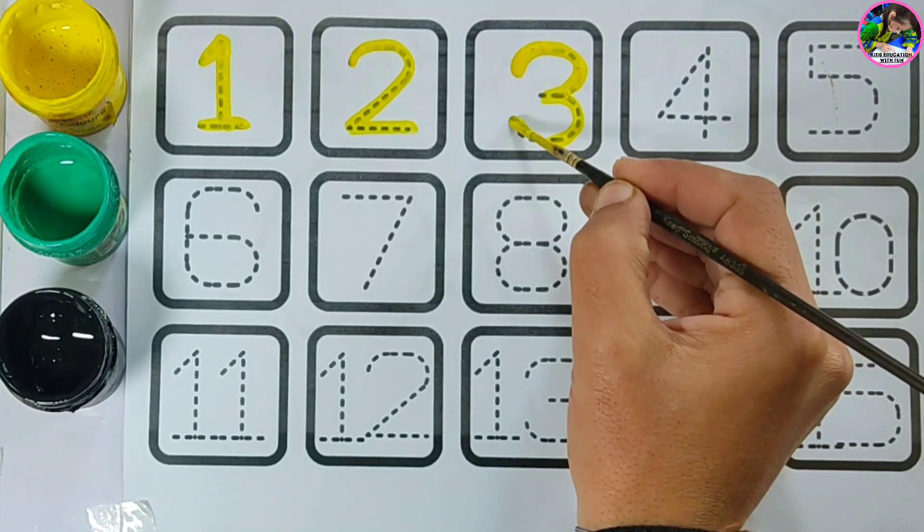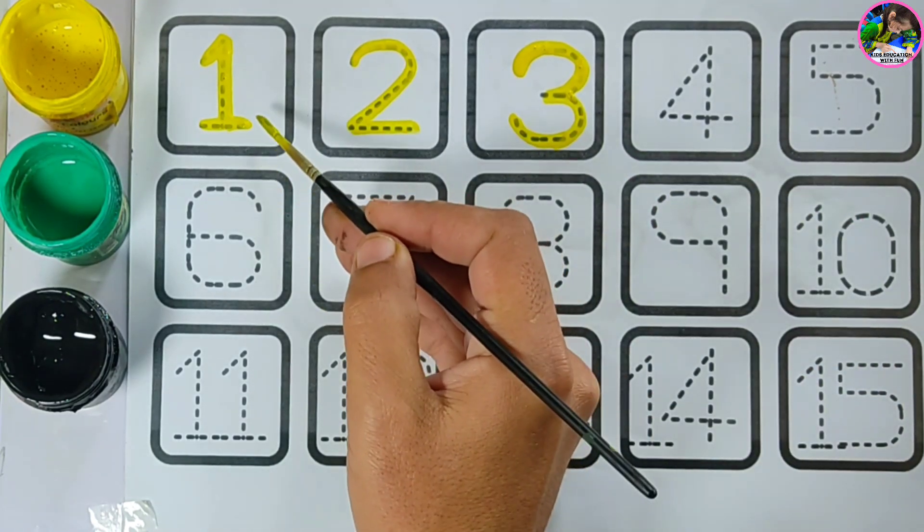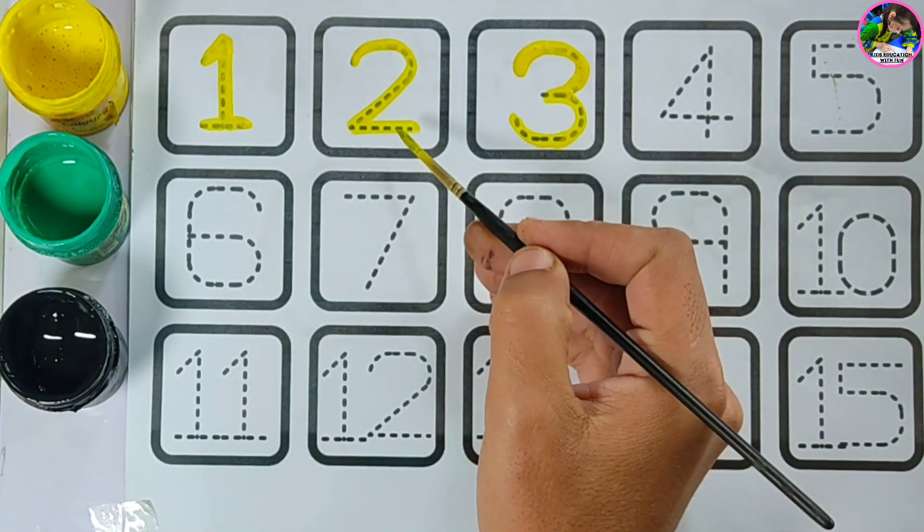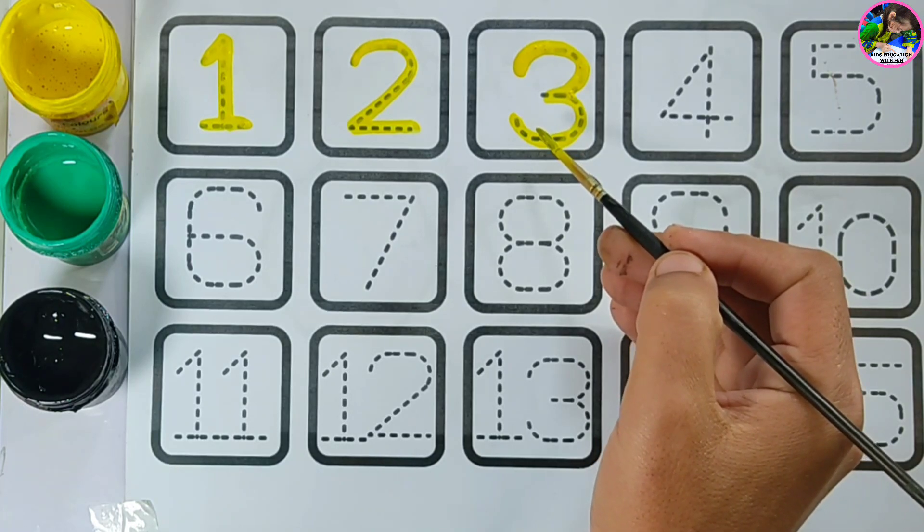Three. Can you know the spellings of these numbers? O-N-E, one. T-W-O, two. T-H-R-E-E, three.